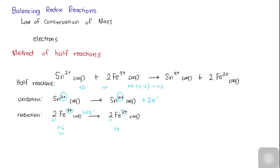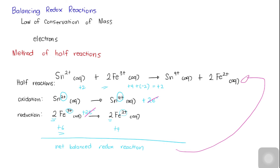Now we can write the net balanced equation. Take a look at our two half-reactions. Notice that we have added the same number of electrons for both the oxidation and reduction half-reactions, so we can cancel them out, leading us to the balanced redox reaction. To prove this is balanced, let us check the charges: on the reactant side, we have 2+ for tin and 6+ for iron, summing to 8+. On the product side, we have 4+ for iron and 2+ for tin, totaling 8+. Both sides are equal and balanced.